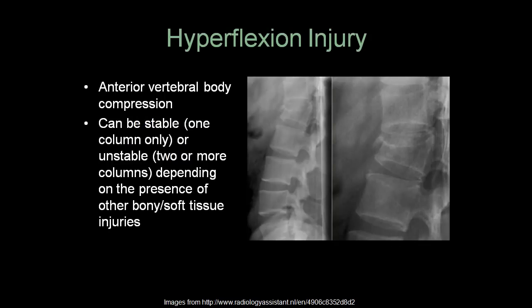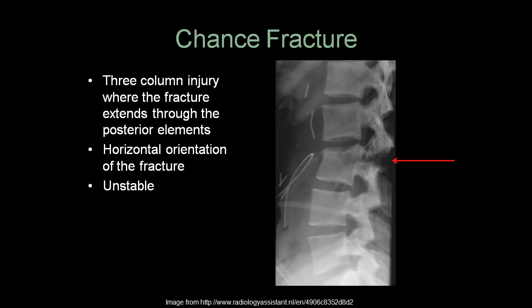With a hyperflexion injury, the anterior vertebral body is compressed. These can be stable if only one column is involved, or unstable if two or more columns are involved. A chance fracture is a three-column injury where the fracture extends through the posterior elements. The fracture line has a horizontal orientation. This is considered unstable because it goes through all columns.